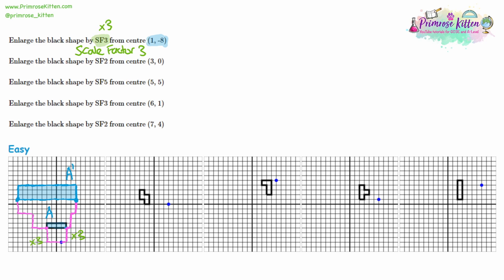Moving on to question two. Again, choose a corner or vertex of the shape and measure the distance — it's a distance of four to the left. Now question two says SF2, scale factor two. That means we are multiplying that distance by two. So we're going four to the left, we're going to go another four to the left — eight to the left altogether — and then there is our brand new bottom right corner. Let's choose another one — this one is two up and four to the left. So we multiply that by two, giving us four up and eight to the left. And now we can start to see the shape take shape.